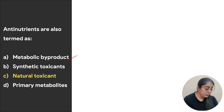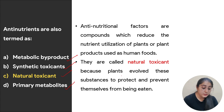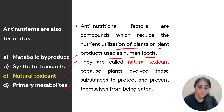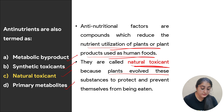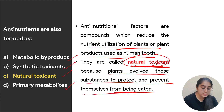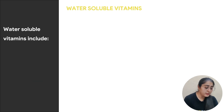Next: anti-nutrients are also termed as — options are metabolic by-product, synthetic toxicants, natural toxicant, or primary metabolites. Anti-nutritional factors are compounds which reduce nutrient utilization of plant products by humans. For example, tannin is an anti-nutritional factor known to reduce absorption of iron. Plants have evolved these substances to protect themselves from being eaten, so they are also called natural toxicants. The correct answer is natural toxicant.